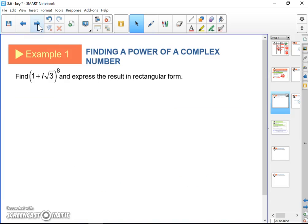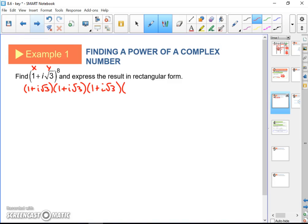Let's look at example 1. Find (1 + i√3)^8 and express the result in rectangular form. Here you see rectangular form with an x and a y. If this was algebra 1 class, you could foil this out, but I really don't want to do that 8 times. That's going to be a monster of a problem.